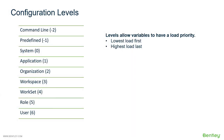Let's briefly take a look at the concept of configuration levels. Levels allow variables to have a load priority — lowest load first, highest load last. The levels are: command line parameters, predefined parameters, system variables, application, organization, workspace, workset, role, and user variables.